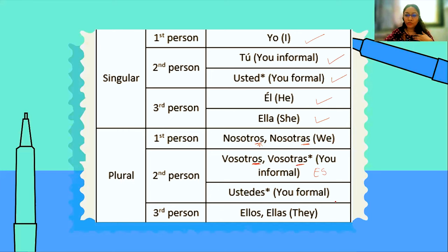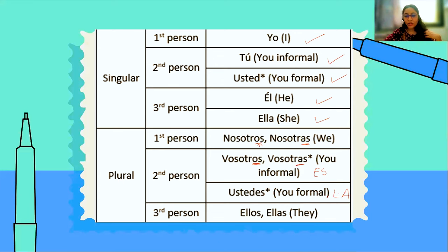What if I am talking to my relatives, all elders, or my teachers? I say 'ustedes' — we will not use 'vosotros' or 'vosotras.' We always use 'ustedes.' And outside of Spain, wherever Spanish is spoken, we use 'ustedes' — not 'vosotros' or 'vosotras,' which are exclusive to Spain. The last one: 'they' masculine is 'ellos,' feminine is 'ellas.'